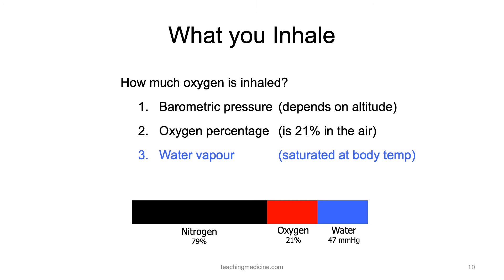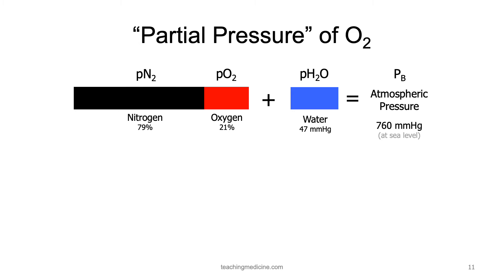So why are we spending a fair bit of time on water vapor? The answer is we need to know how much oxygen we are breathing in. The amount of oxygen calculated requires that we understand how much nitrogen, oxygen, and water vapor is in the air that we inhale. So we're going to show nitrogen at 79%, oxygen at 21%, and then water at 47 millimeters of mercury. To summarize, when we inhale air, we are inhaling 79% nitrogen, 21% oxygen, and our body is adding 47 millimeters of mercury of water.